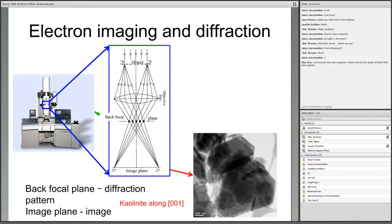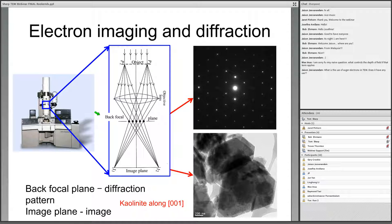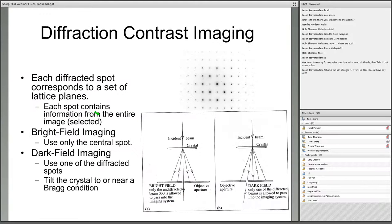If I make an image of the image plane, it would look like this. These are clay particles, kaolinite. That's what the image of the material looks like. But if I project the back focal plane onto the screen, I get a diffraction pattern. In TEM, we go back and forth between diffraction and image with the touch of a button, and we do it all the time. What we see in the image is totally dependent on the diffraction conditions that we've created in the crystal.